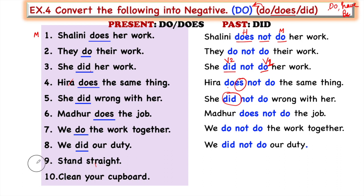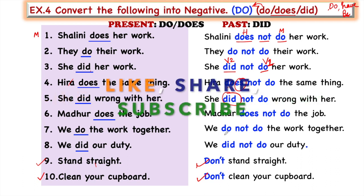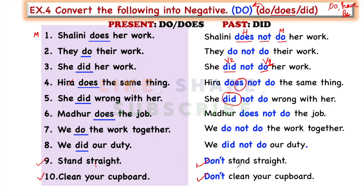These two sentences are examples of imperative sentences. In imperative sentences we use 'don't' before the verb: 'Stand straight' → 'Don't stand straight.' 'Clean your cupboard' → 'Don't clean your cupboard.' We had discussed in Part 1 that we use 'don't' in imperative sentences, and these are very easy to form. If you have any doubt related to this topic or any other, you can leave your comments in the comment section and I will surely reply. Thanks for watching. Stay connected.